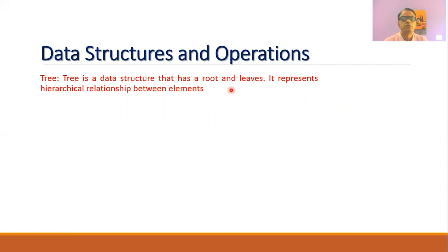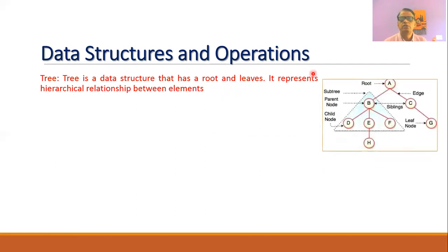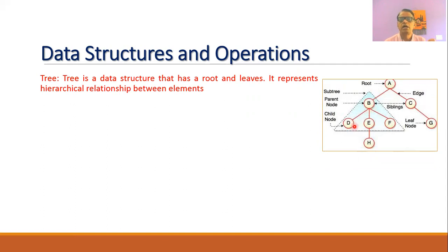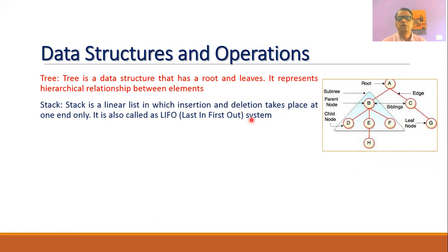A tree is another commonly used data structure. It has a root and leaves, and is used to represent hierarchical relationships between data elements. As shown in the diagram, a tree has a root, and then nodes which can be called siblings or leaves. Every node can have further child nodes, making it a parent node. When there are no further nodes, those are the leaves of the tree.